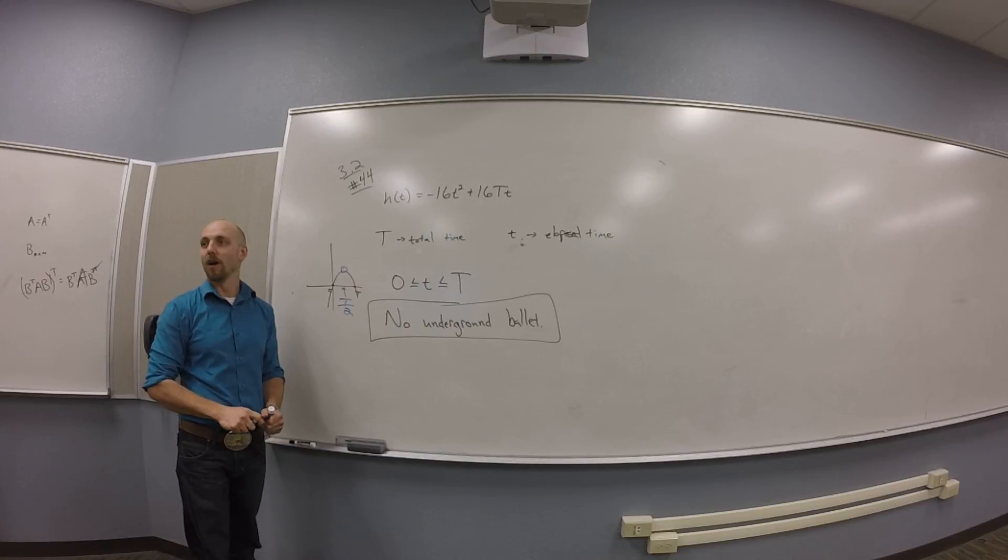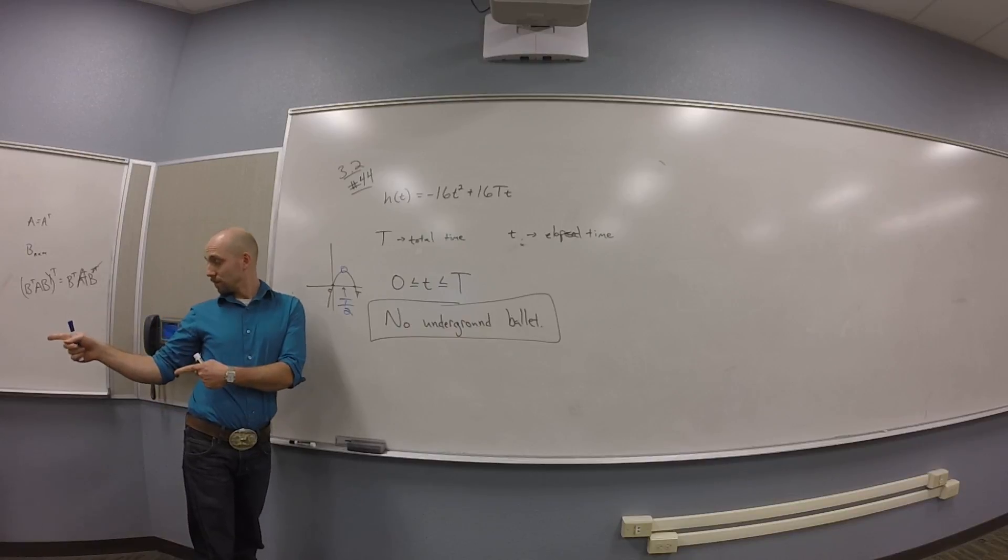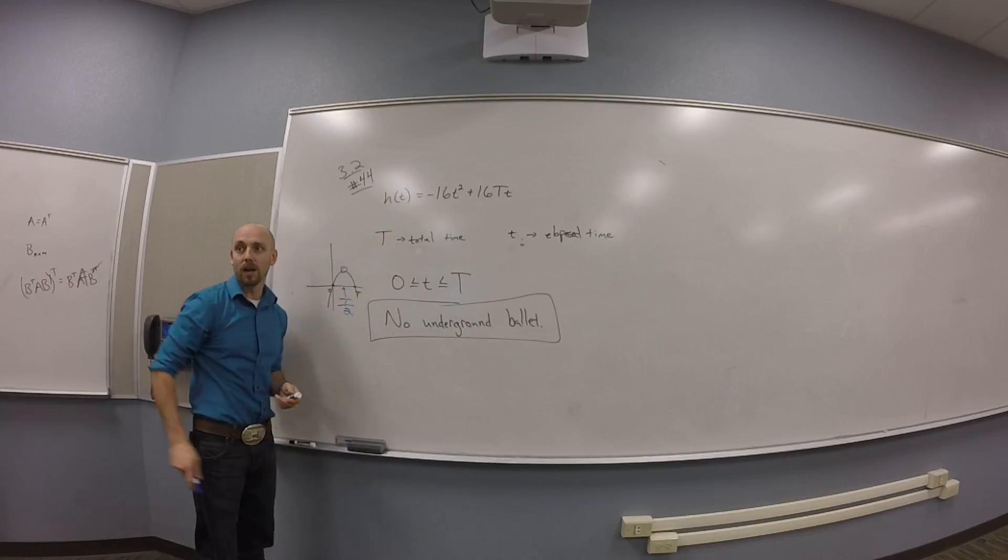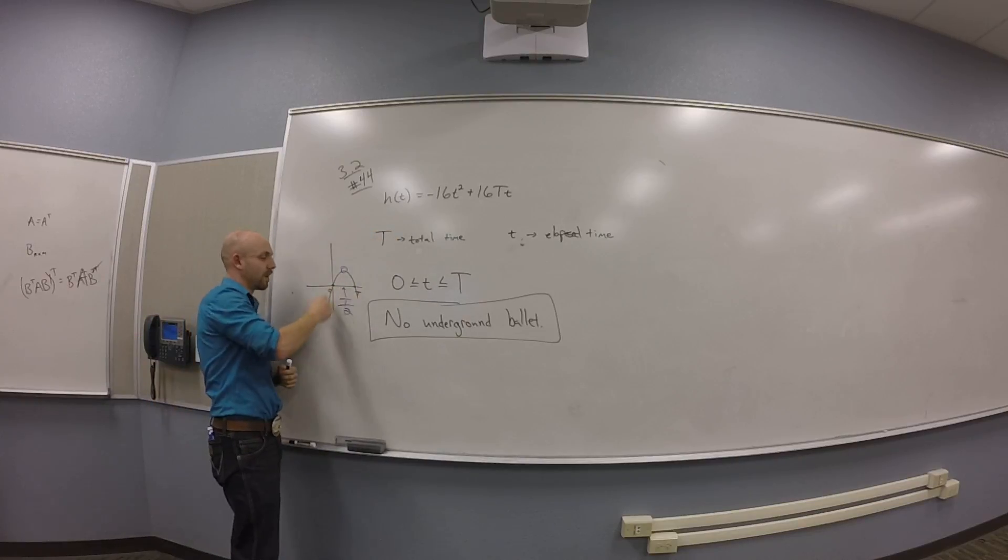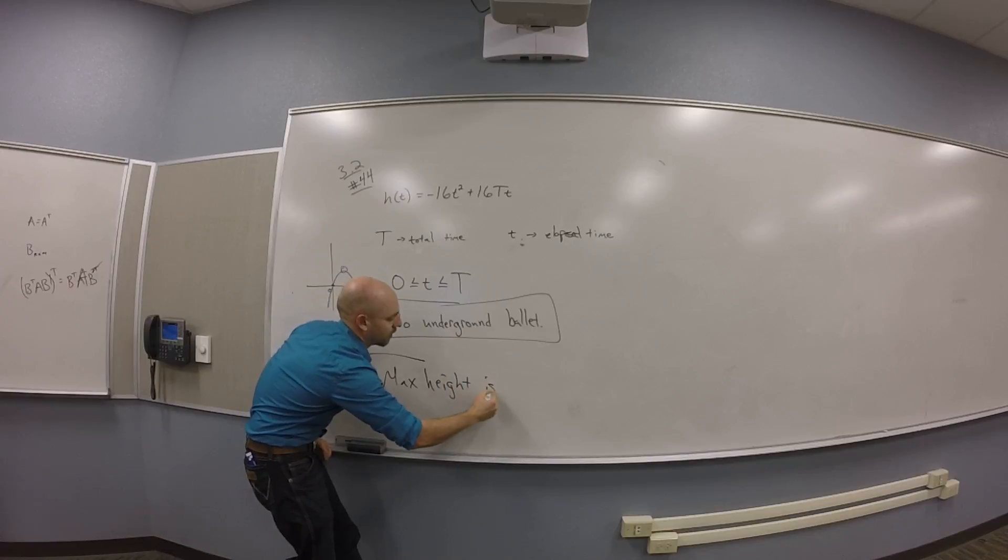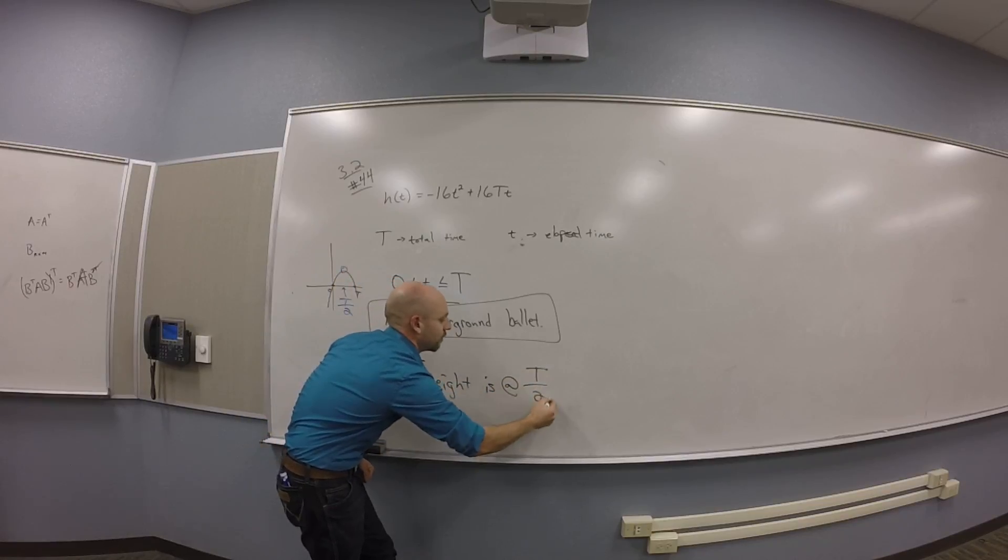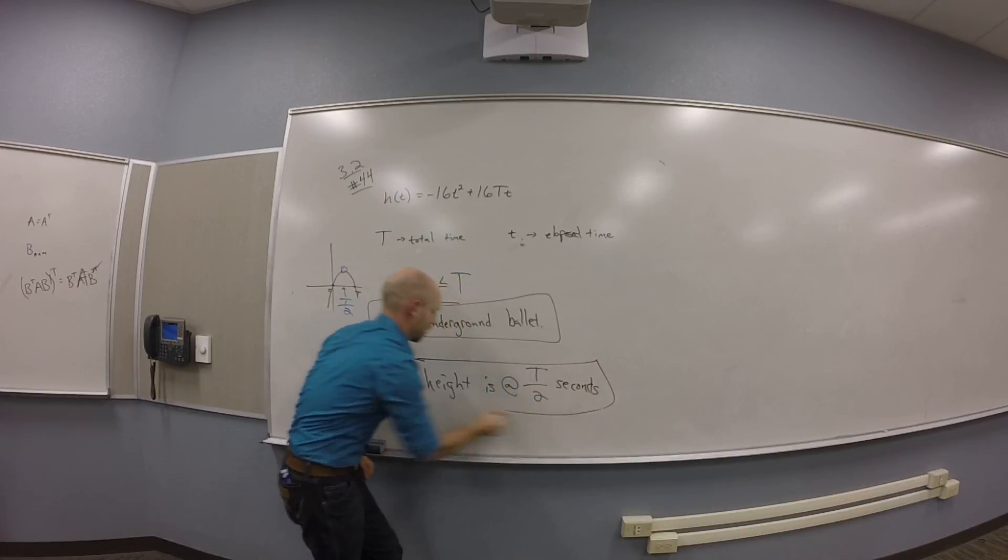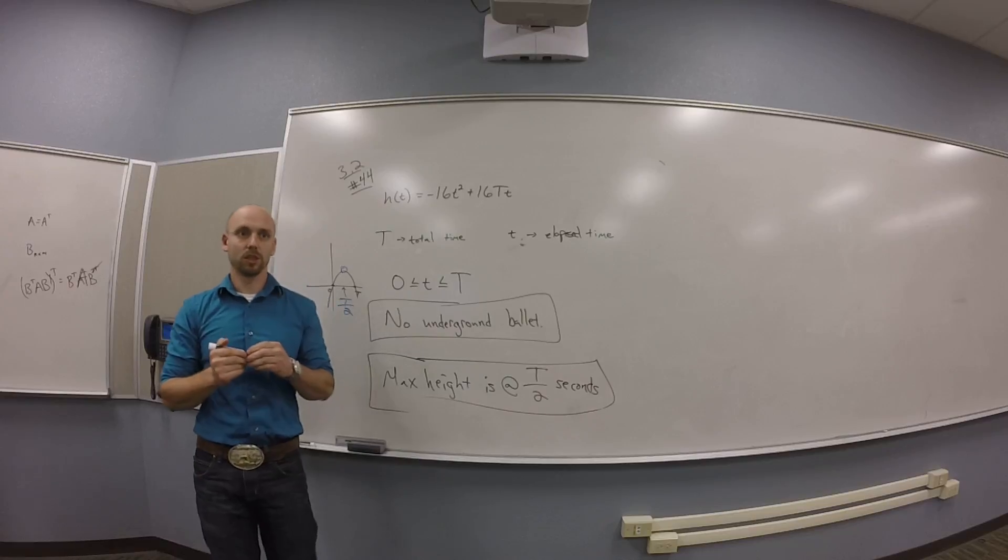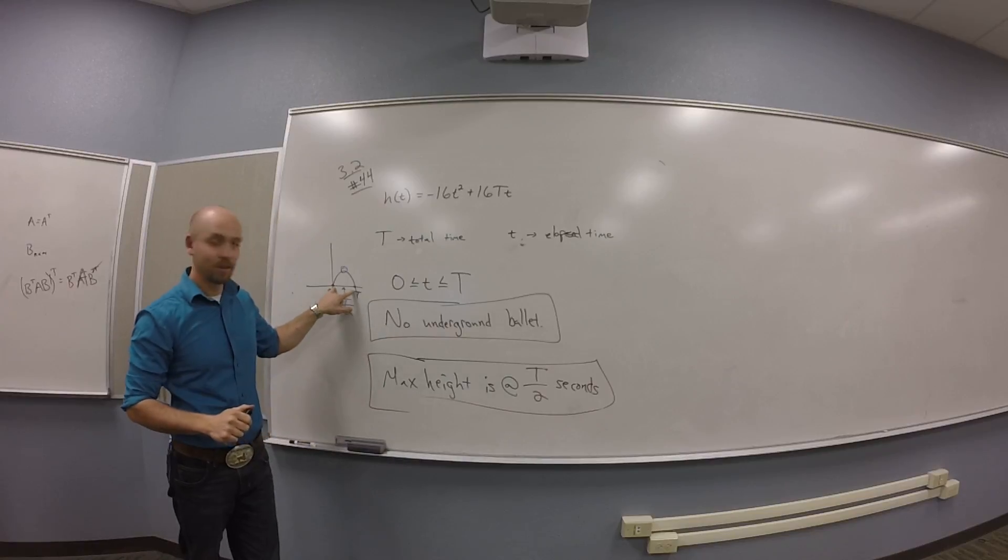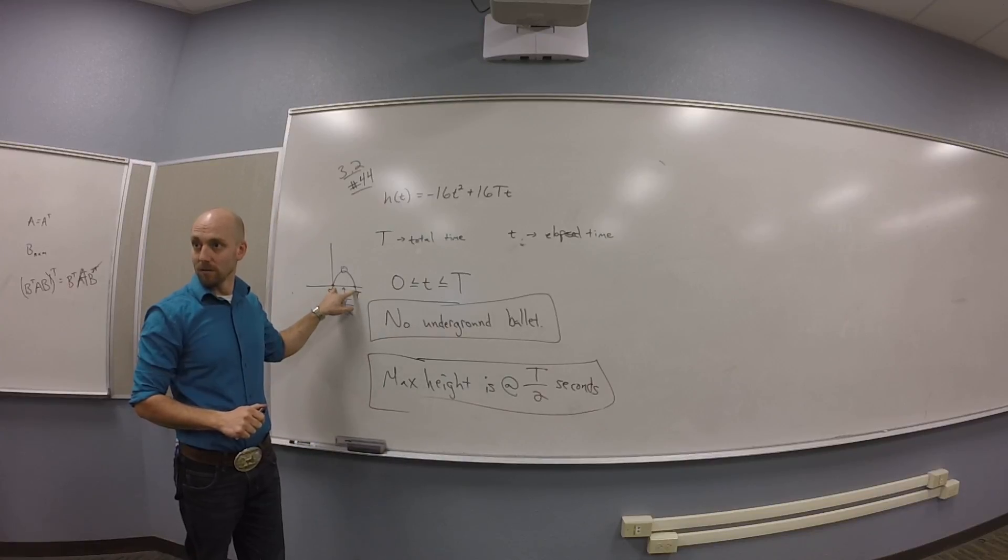How would I find out how high she jumps? You plug that into the h function. Yeah, take that T over 2, plug it into the h function to get a height out. This thing here is a time. So max height is at capital T over 2 seconds. Cool. Questions? Do I need to demonstrate to you that those are the x-intercepts? No.